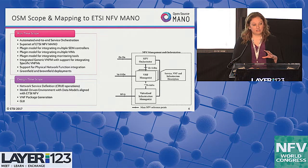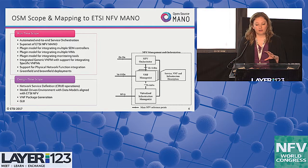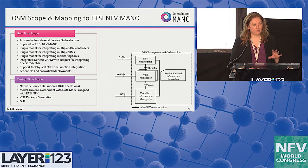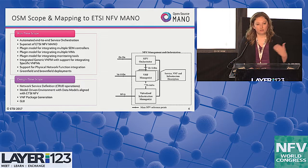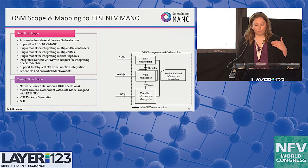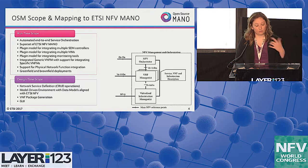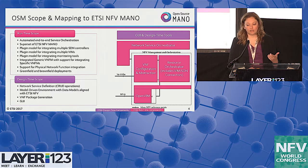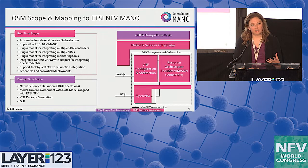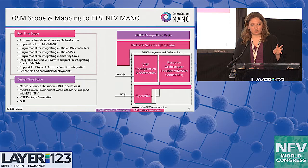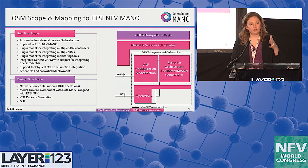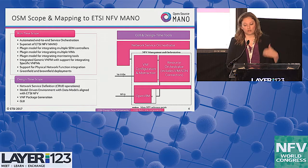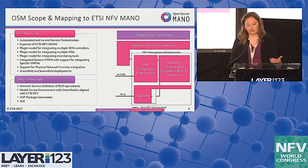When we look at the ETSI MANO specifications, it's very important in OSM that we align with these specifications and adhere to them in our implementation. We look at both the runtime scope and the design time scope when adhering to this architecture. When you overlay the OSM components onto the ETSI MANO diagrams, you'll see complete alignment there, where we have the VNF configuration and abstraction layer, as well as the resource orchestrator and the VIM SDN controller within the scope of OSM.